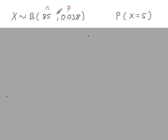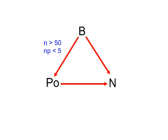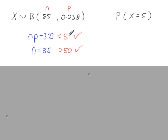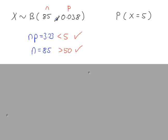In this example, we're working out the probability that x equals 5. It is possible to use the binomial formula since we're calculating a single probability, but if you're told to use an approximation in a question, then you have to. So in this one, we're going to use an approximation. The first step is to check the conditions: large value for n, and the mean must be less than 5. Both conditions are met.